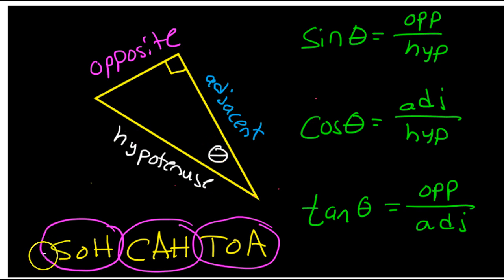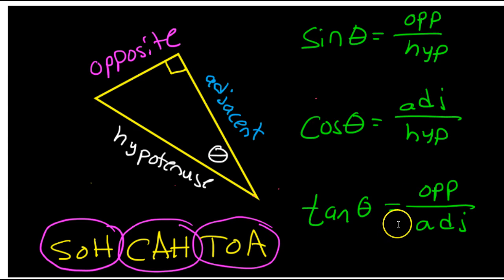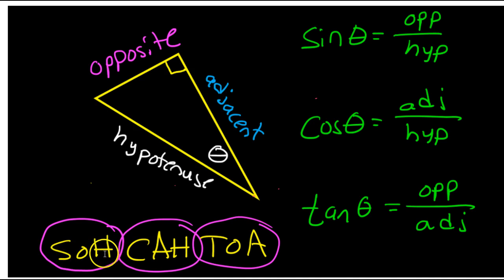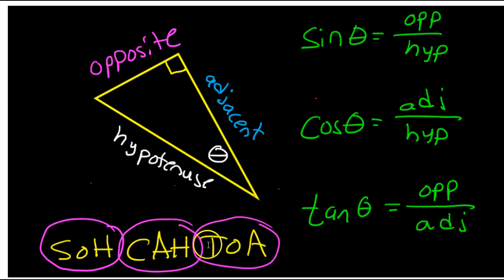The magical word SOHCAHTOA will help you remember these three important definitions. The SOH part means sine is equal to opposite over hypotenuse. The CAH part, cosine, is adjacent over hypotenuse. And TOA, tangent, is opposite over adjacent. SOHCAHTOA.